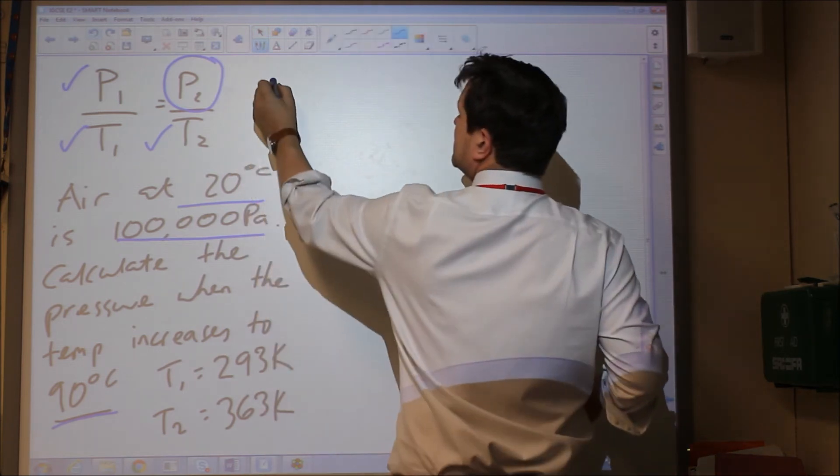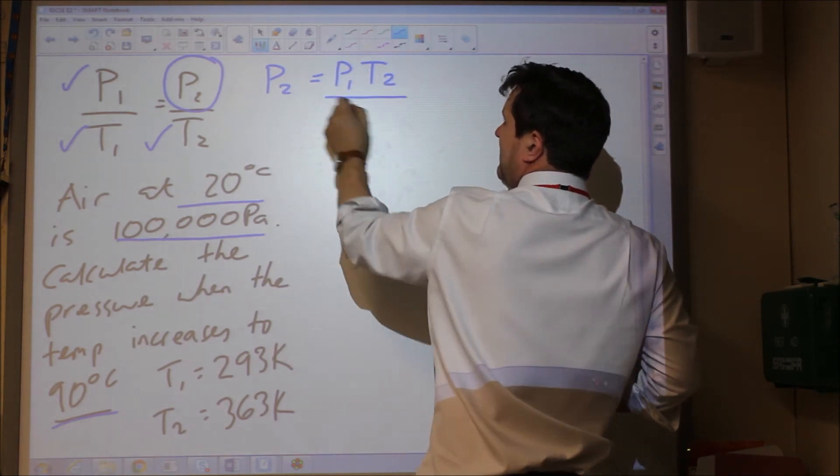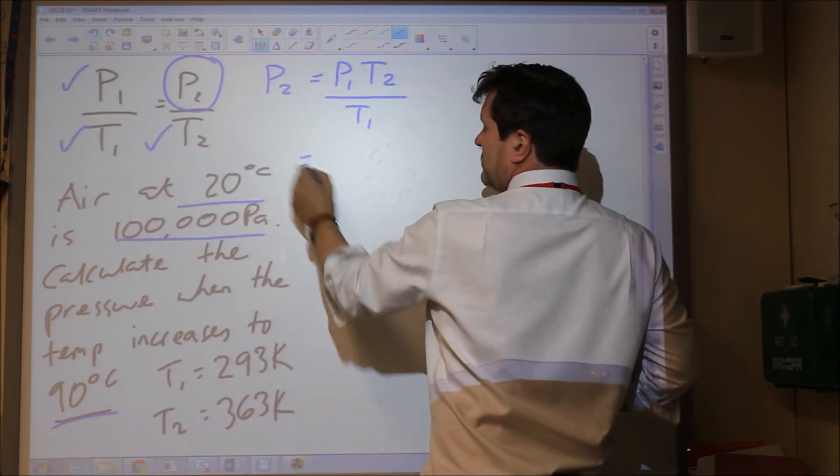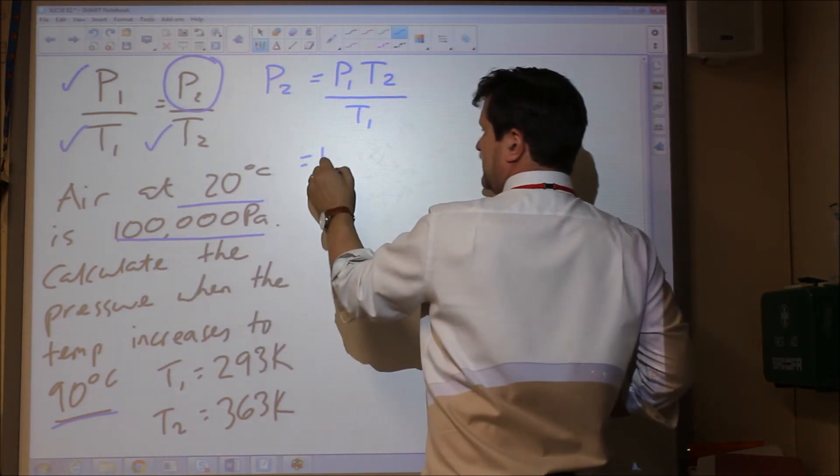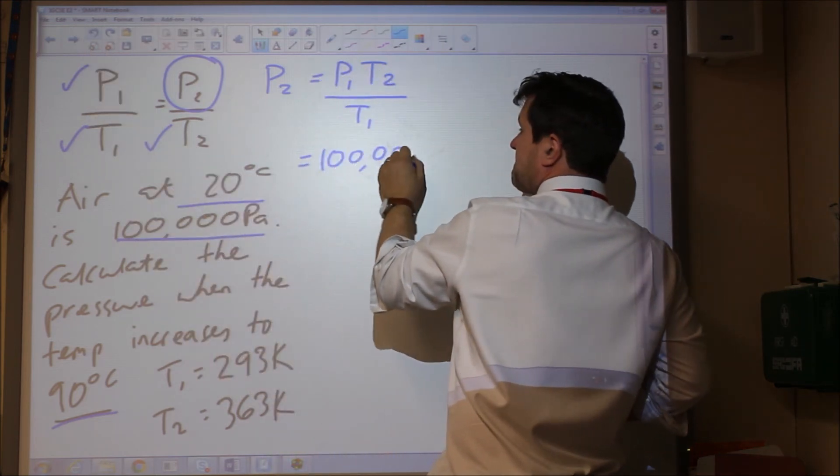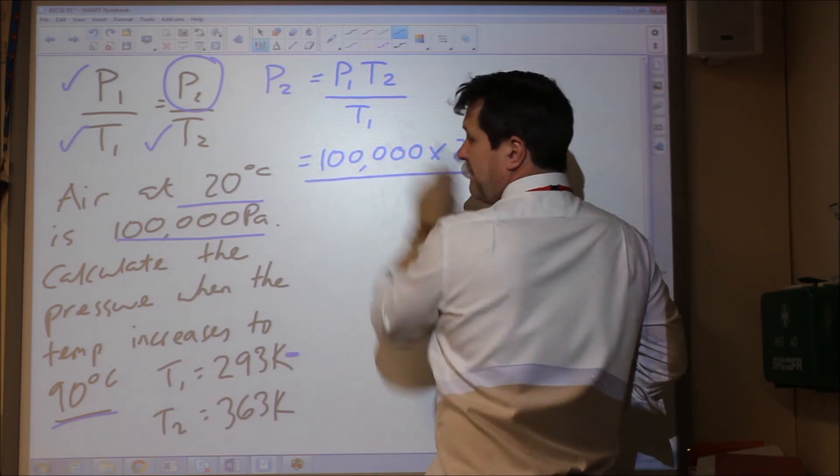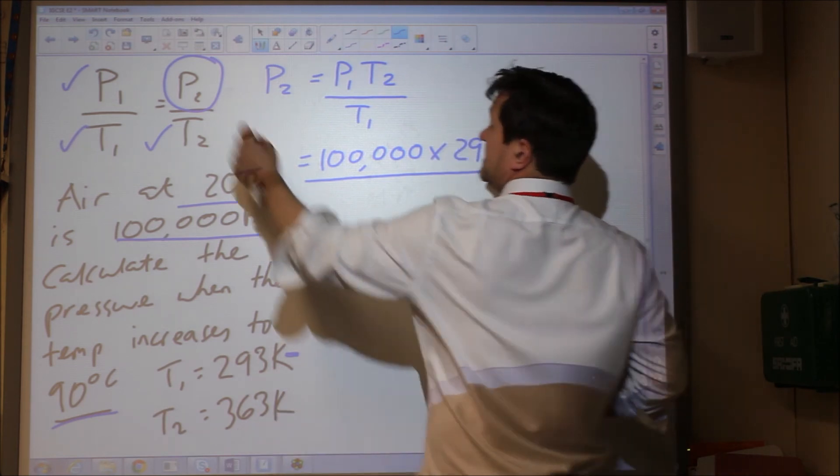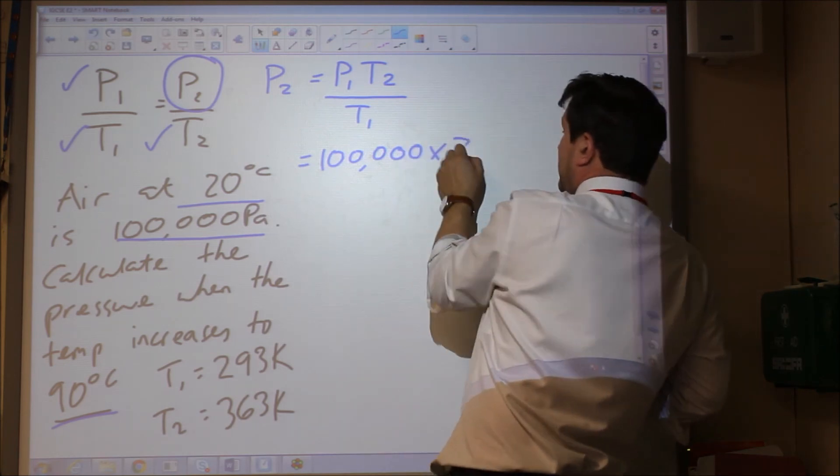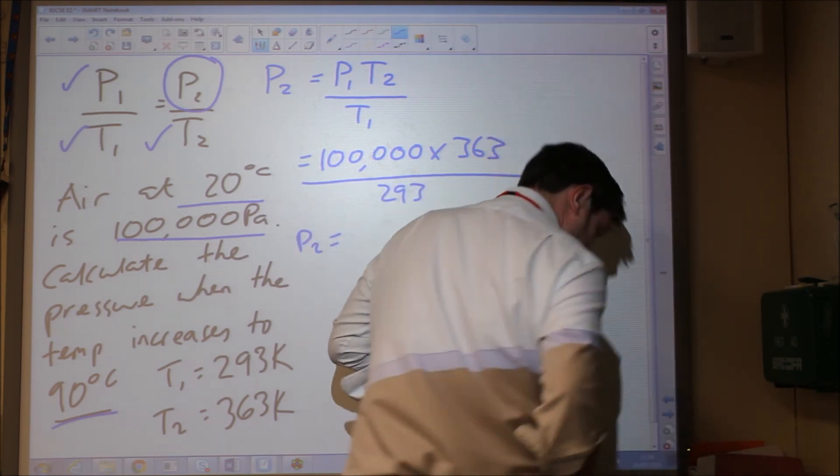If I rearrange this equation I could say P2 equals P1 T2 divided by T1. That equals pressure 1, 100,000, times T2 which is 363 divided by 293, and this will give us pressure 2. This equals 124,000 pascals.